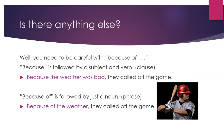You also need to be careful with 'because of.' 'Because' is followed by a subject and verb — we call this a clause. For example: 'Because the weather was bad, they called off the game.' 'Because of' is followed by just a noun — we call this a phrase. For example: 'Because of the weather, they called off the game.'